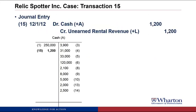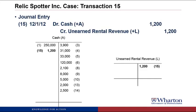Then we post this to T-accounts. We add something on the debit side of cash, so we increase cash from this transaction. And we create a T-account for unearned rental revenue, which has a credit balance.